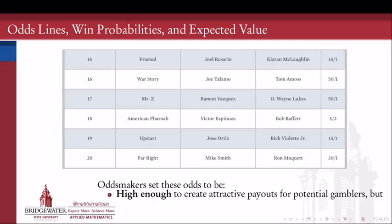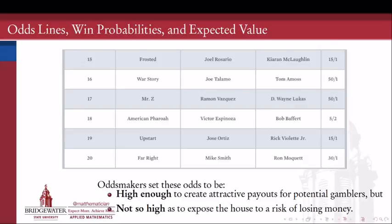If I'm an oddsmaker, I want to set the odds high enough to attract somebody to gamble. The higher I set the odds, the more reward there is for a given amount of risk, so the more attractive it is for a gambler. But I also have my own books to balance — I don't want to set the odds so high as to expose the house to the risk of losing too much money. If I had set American Pharaoh at 50 to 1, I would have taken a bath, because American Pharaoh ended up winning and I would have had to pay out 50 times what I brought in. So it's my job to find the balance between odds high enough to attract gambling but not so high that the house risks losing a lot of money.